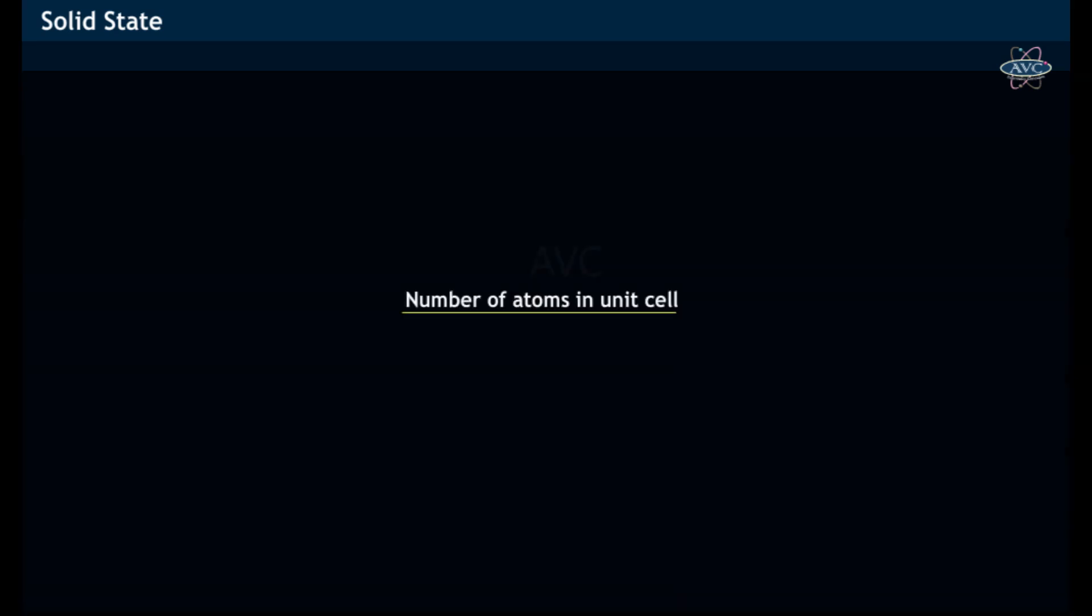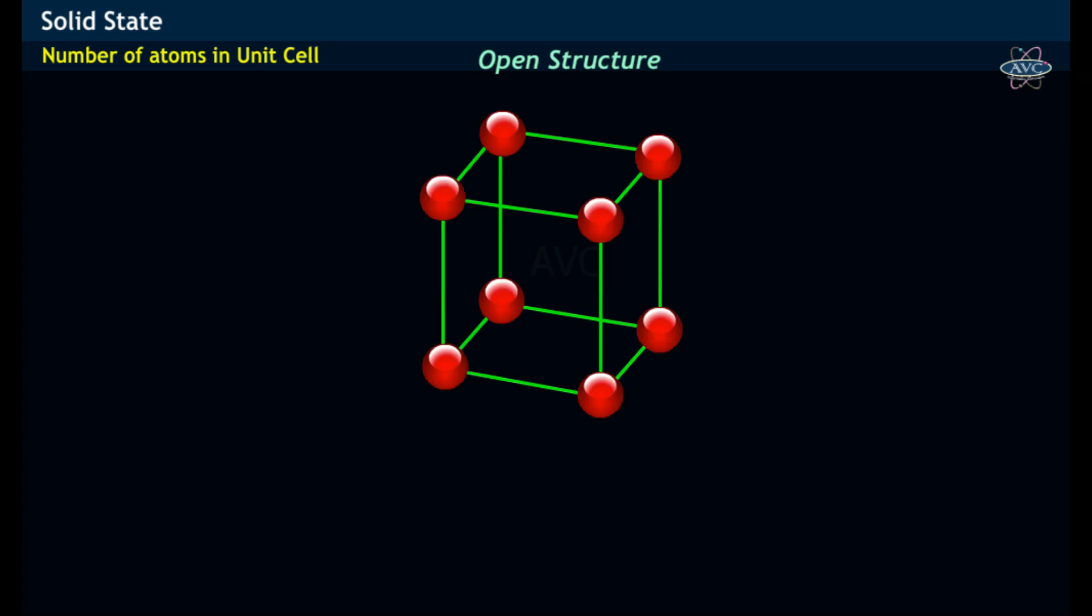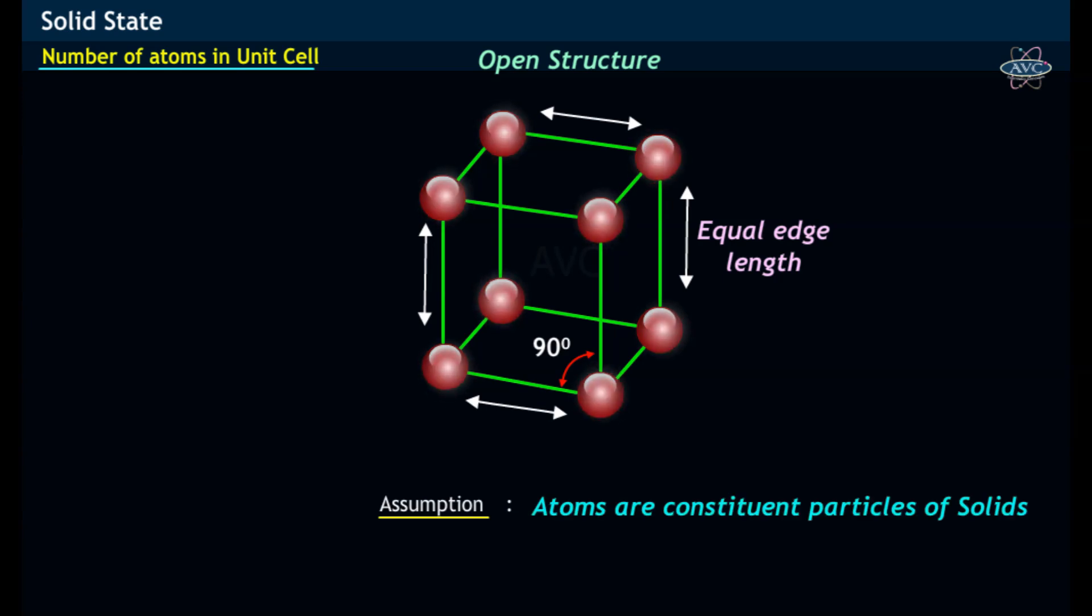Let us have a detailed description on the number of atoms in a cubic unit cell. A cubic unit cell has equal lengths with 90 degree angles at corners. Let us find out the number of atoms in various unit cells assuming that atoms are constituent particles.